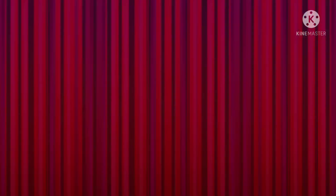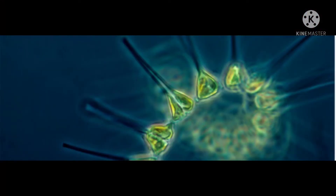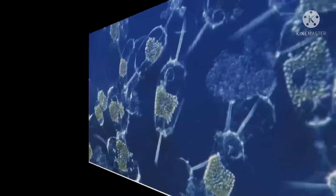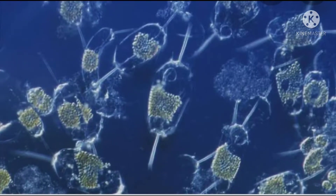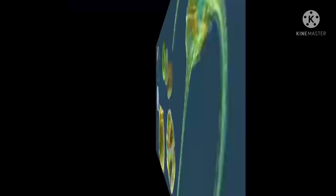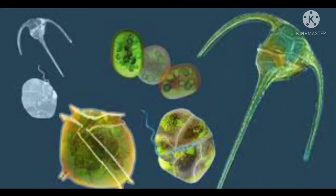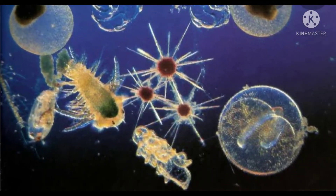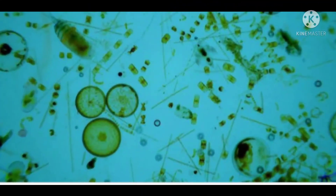Phytoplankton are the autotrophic components of the plankton community and a key part of ocean and freshwater ecosystems. The name comes from the Greek words phyton, meaning plant, and planktos, meaning wanderer or drifter.